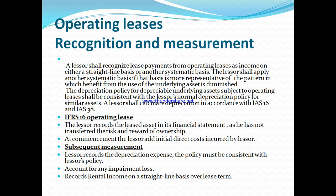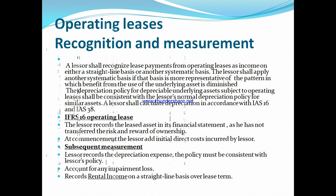As the lessor has not transferred the risk and reward of ownership under an operating lease, the lessor records the lease asset in its financial statement. The lessor shall record any initial direct costs incurred. For subsequent measurement, the lessor records the depreciation expense with policy consistent with the lessor's policy. For any impairment loss, the impairment loss is added to the account. Record rental income on a straight-line basis over the lease term.